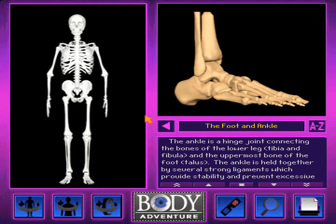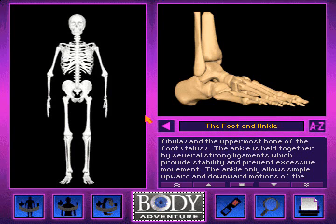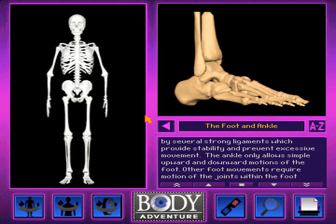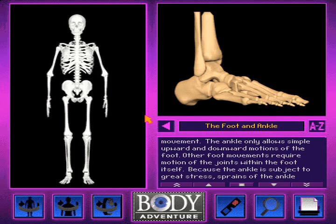The ankle is a hinge joint connecting the bones of the lower leg, tibia and fibula, and the uppermost bone of the foot, talus. The ankle is held together by several strong ligaments which provide stability and prevent excessive movement. The ankle only allows simple upward and downward motions of the foot. Other foot movements require motion of the joints within the foot itself.